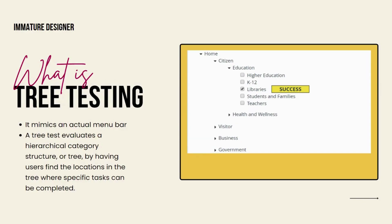After making a menu bar that you think will represent the menu bar of your real-world website, you ask your users to do a tree test. Tree testing evaluates a hierarchical category structure — you cannot just place anything to make a group. You have to be considerate when creating a menu bar, because it's a hierarchical category structure which looks like a tree — that's why it's called tree testing.